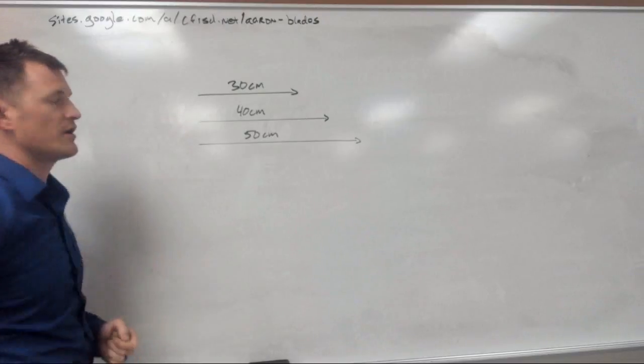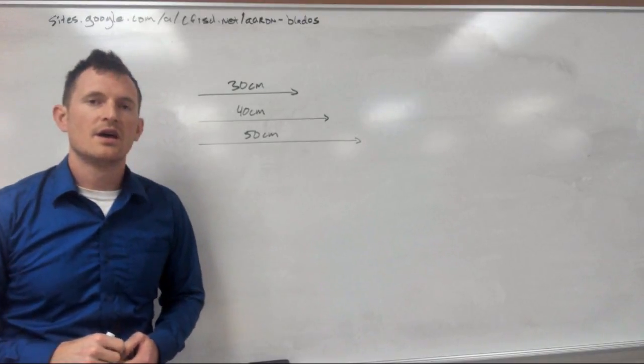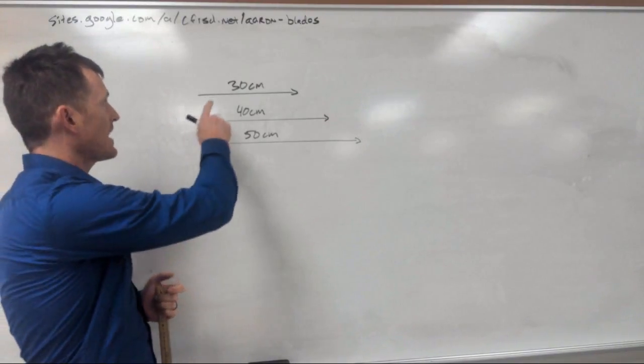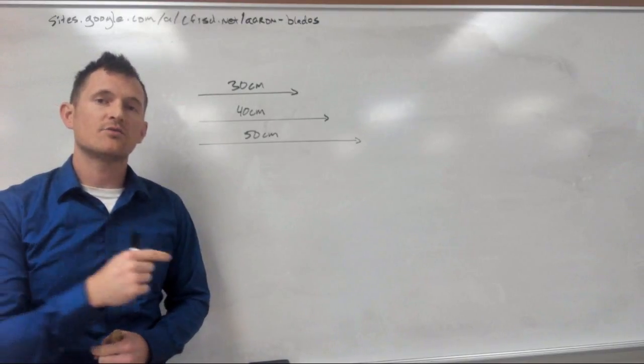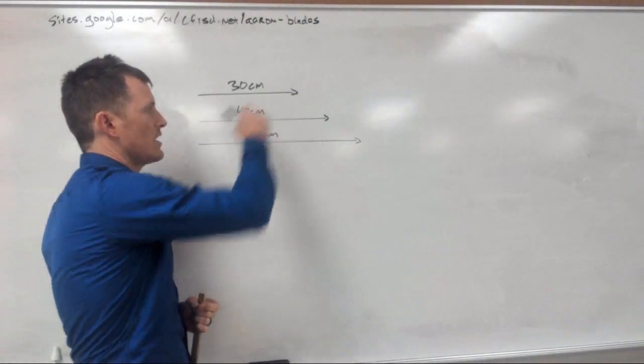So you can tell that I have drawn three vectors up here on the board. You can tell they're vectors because they each have a magnitude, which is their length that I've already drawn on there, and a direction indicated by the little arrowhead at the tip of it.